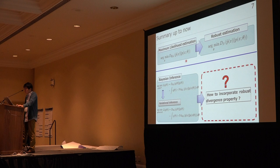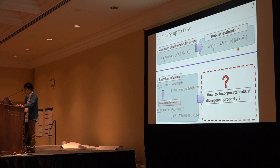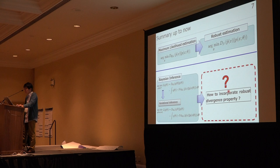In non-Bayesian methods, there exists a general robust estimation method: minimize the generalization error using robust divergence instead of KL divergence. The benefit of this approach is that we do not have to change the parametric model to enhance robustness. Therefore, this robust divergence minimization framework also seems very promising for enhancing robustness in the Bayesian framework.